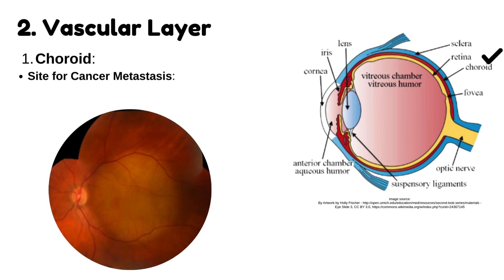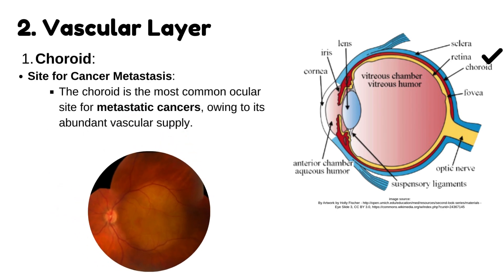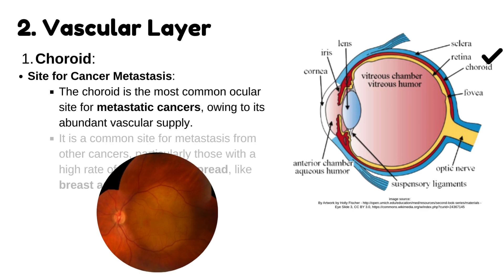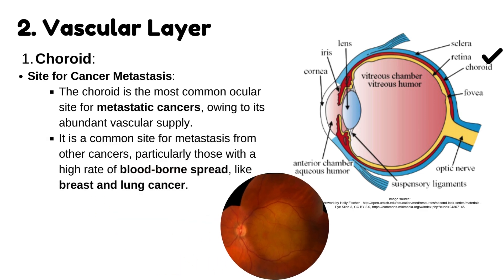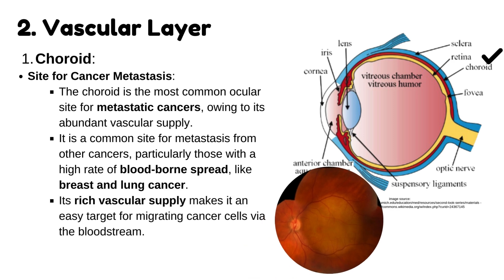The choroid is the most common ocular site for metastatic cancers, owing to its abundant vascular supply. It is a common site for metastasis from other cancers, particularly those with a high rate of bloodborne spread, like breast and lung cancer. Its rich vascular supply makes it an easy target for migrating cancer cells via the bloodstream.